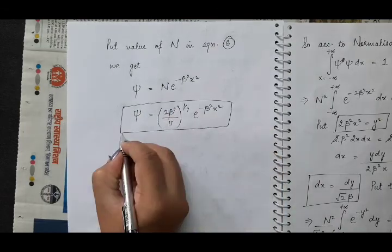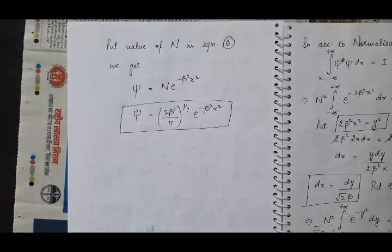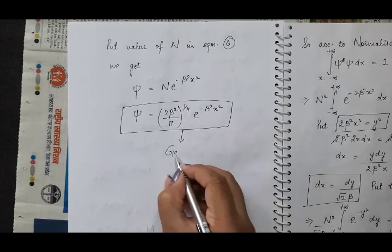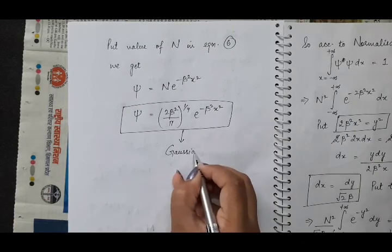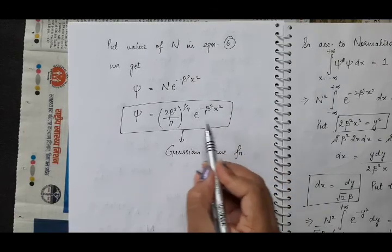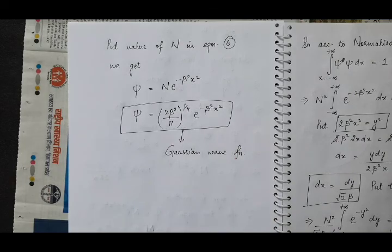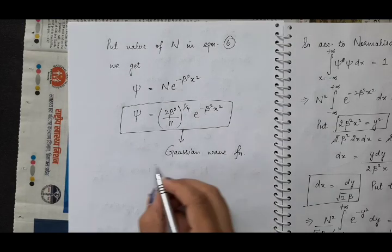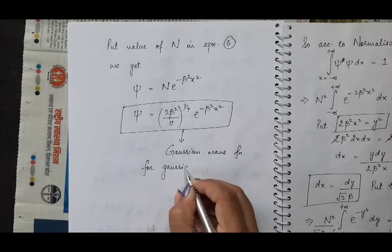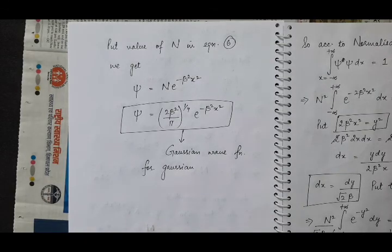This wave function represents a Gaussian function, because this is the expression of a Gaussian curve. So this is the wave function — the Gaussian wave function for the Gaussian wave packet — for which the product of uncertainty in position and momentum is minimum, that is h-bar by 2.